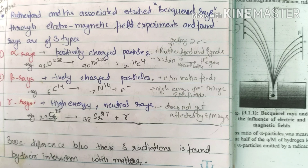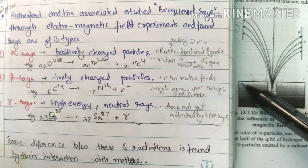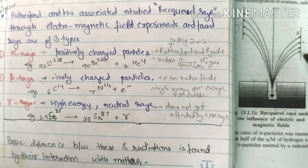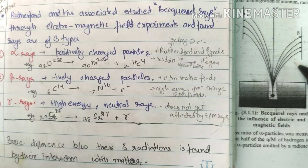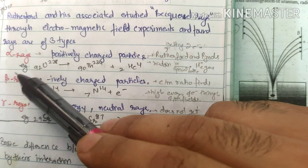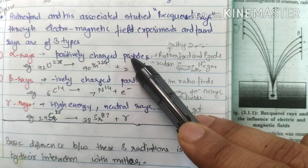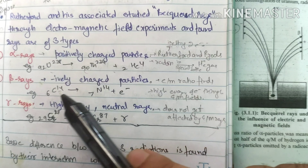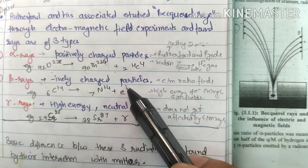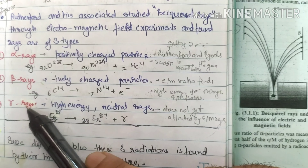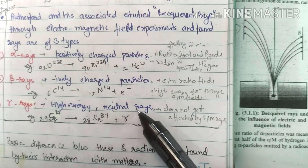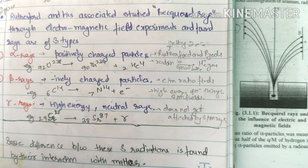Rutherford and his associates studied Becquerel rays through electromagnetic field experiments and found 3 types of rays. When Becquerel rays were put under an electromagnetic field, three types of rays were identified: alpha rays, which are positively charged rays given by this reaction; beta rays, which are negatively charged rays given by this reaction; and gamma rays, which are high energy neutral rays given by this reaction.